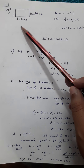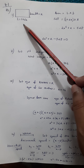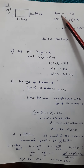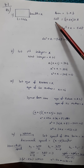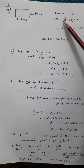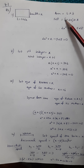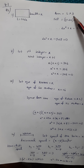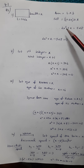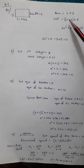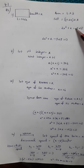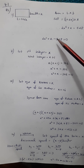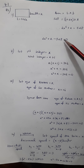So breadth is x, length is one plus two x. The area formula is length into breadth, and the area of the rectangle is given as 528. Substituting: length is one plus two x and breadth is x. Opening the bracket, we get two x squared plus x is equal to 528.